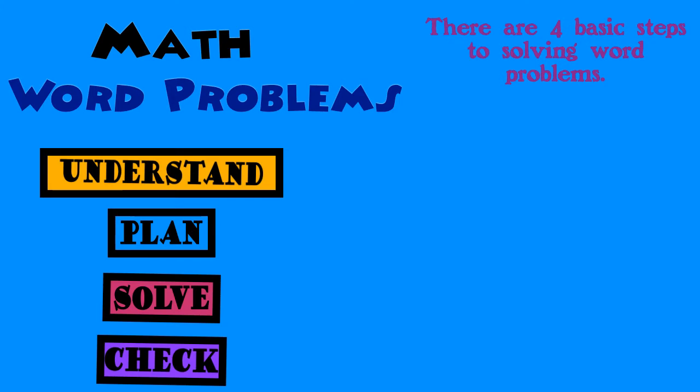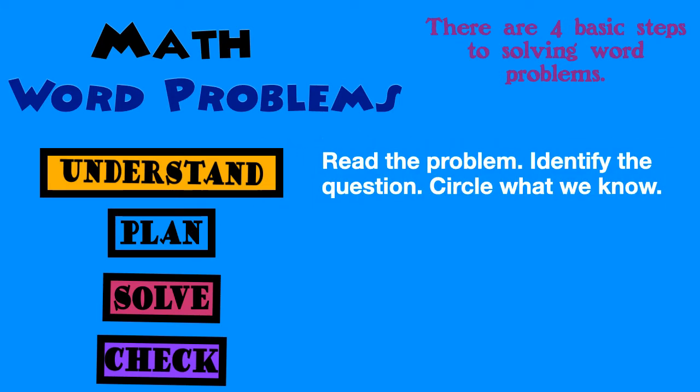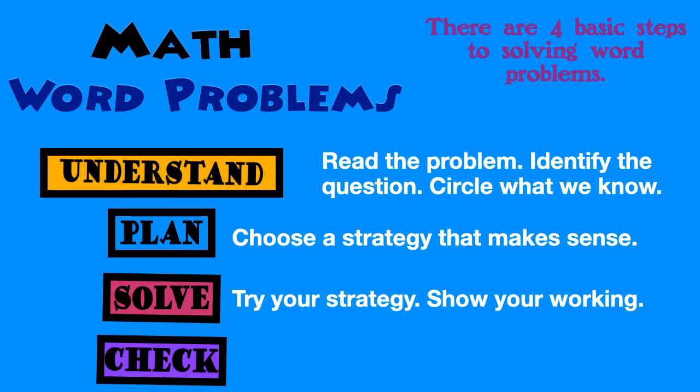When we understand, we read the problem, identify the question, and circle what we know. When we plan, we choose a strategy that makes sense. When solving, we try out our strategy, showing our working. And when we check, we decide if our answer is reasonable.